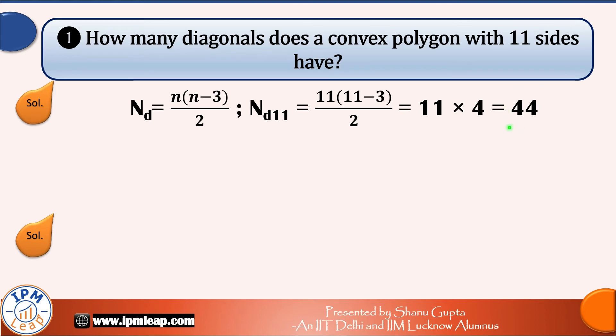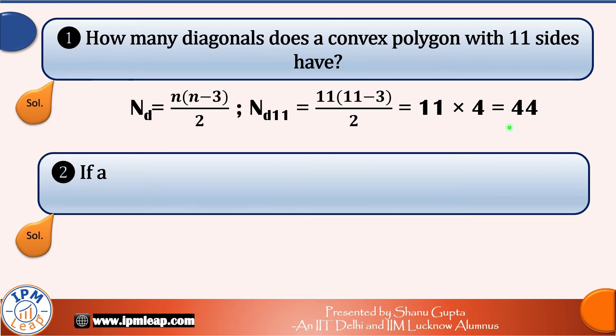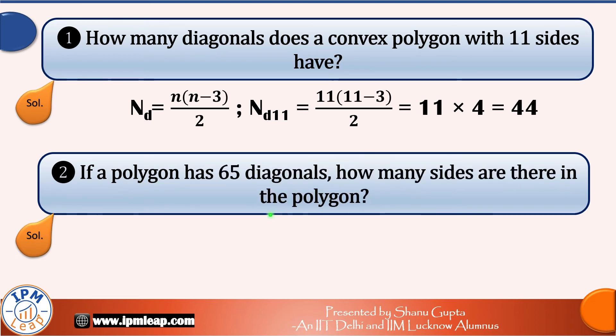The next question is, if a polygon has 65 diagonals, how many sides are there in the polygon? So number of diagonals in terms of sides is n into n-3 divided by 2. That is given. And we have assumed that the polygon has n sides, right?